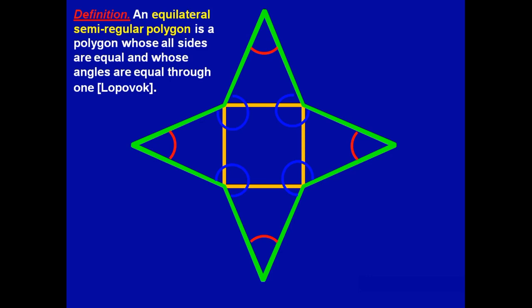So, an equilateral semi-regular polygon is a polygon whose all sides are equal and whose angles are equal through one.